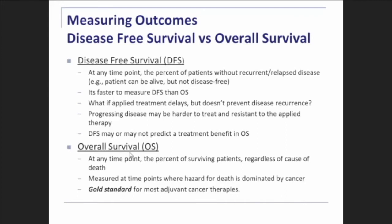We prefer to know about overall survival — at any time point, who's alive and who's died. Death can be from any cause, but at short time intervals after a cancer diagnosis — one, two, three, even five years — the hazard to the patient is far and away greater from the cancer than from other processes. In a randomized study, risk of death from other conditions should be balanced between groups. For adjuvant therapy, the gold standard is better overall survival if you're truly going to believe a therapy should be applied.